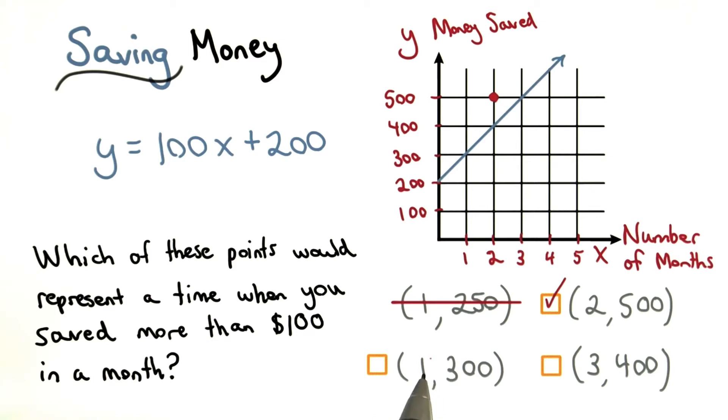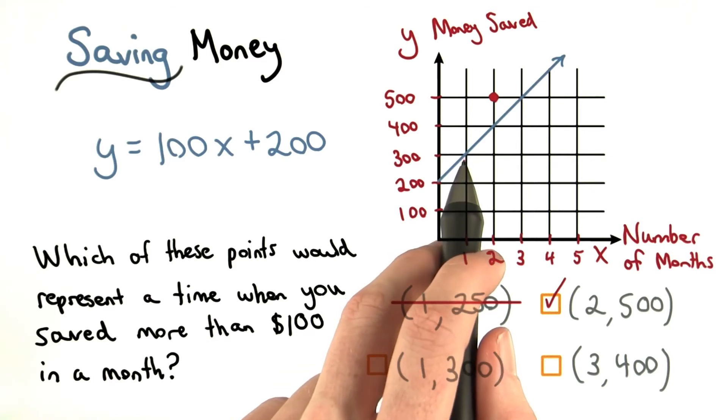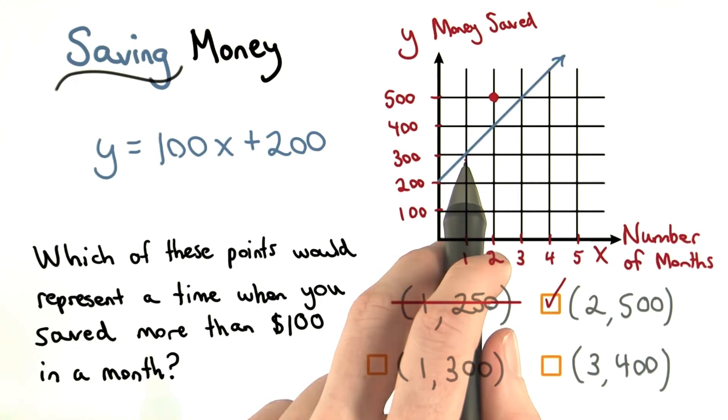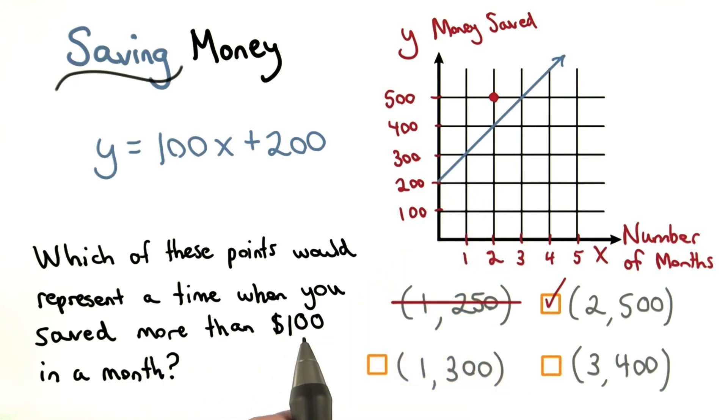This one's a little bit tricky. After one month, I saved exactly $300. Well, this means I saved exactly $100 in that one month, so I didn't save more than $100. So this one's out.